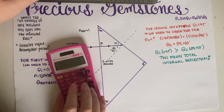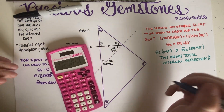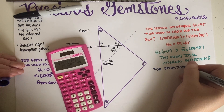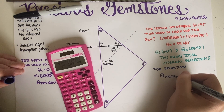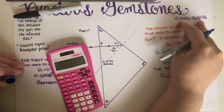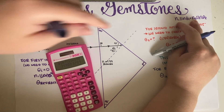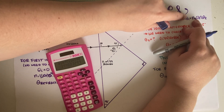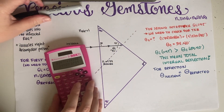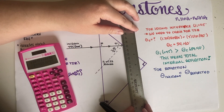For reflection, we use the law of reflection: the incident angle equals the reflected angle. In Snell's law terms, if n1 equals n2 (same medium), then angle one equals angle two. Reflected angle always equals incident angle — this is the general rule. So the reflected angle is also 45 degrees.